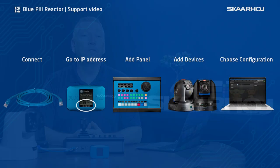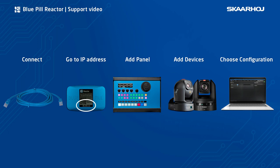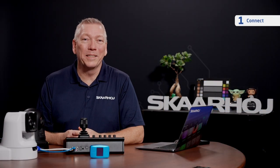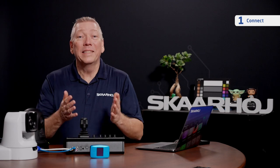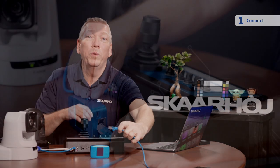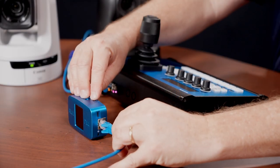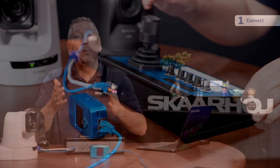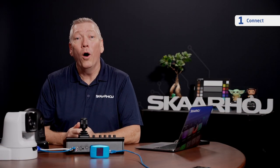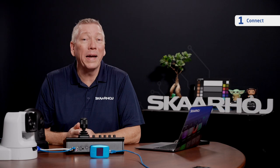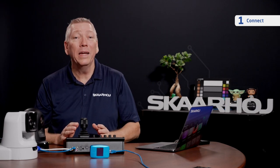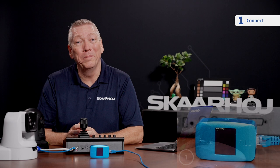Setup has 5 steps. Step 1: Connect. Start by connecting an ethernet cable from your switch to the device. BluePill Server can be powered by Power over Ethernet or using the micro-USB plug. For simple cabling we are using PoE here.